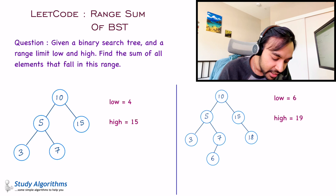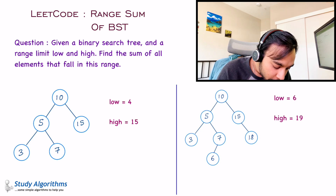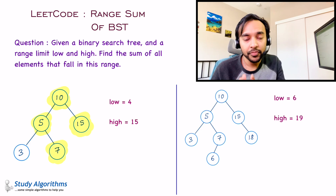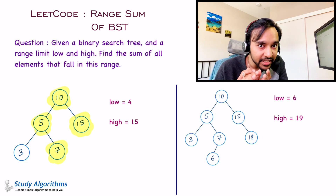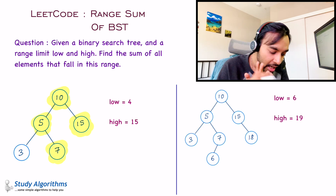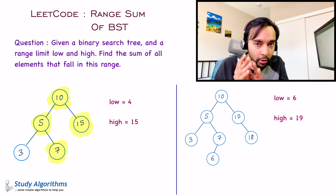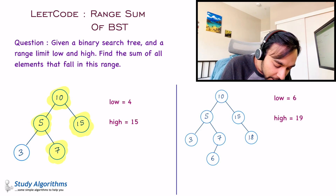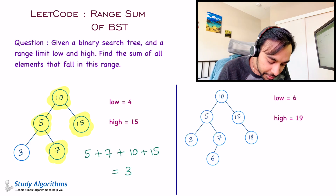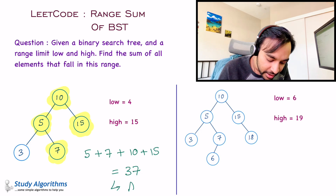When you look at this tree, you see the element 5 is between 4 and 15, 7 is between 4 and 15, 10 is in the range, and 15 is also in the range because the problem says that this range is inclusive. So if you find a 4 in the tree, you also have to include it. Once you have found all these elements, you simply need to add them and print the sum. The total is 37, and for this test case, 37 would be your answer.